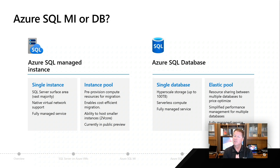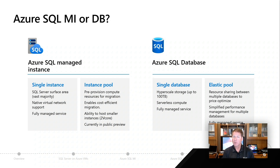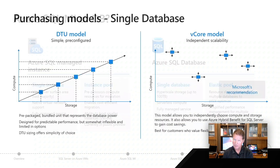So you first pick a single database or an elastic pool, and then you need to make another choice. Before with managed instance, you pick a vCore purchasing model. For database, you actually have two choices for your purchasing model.